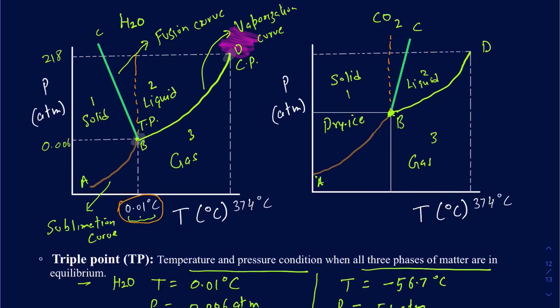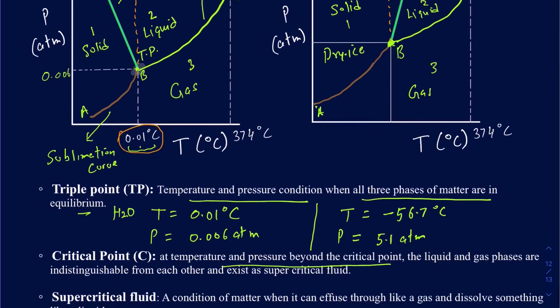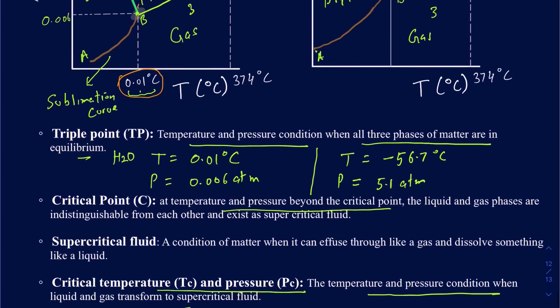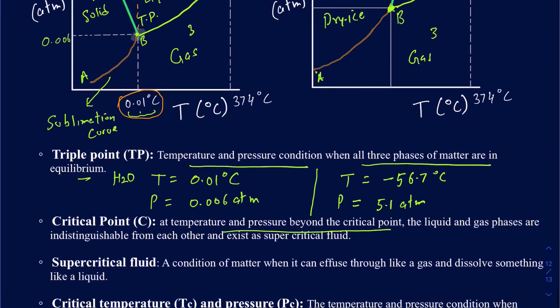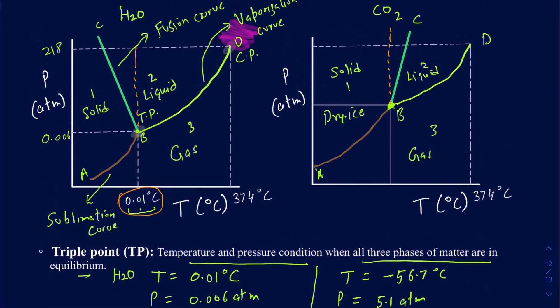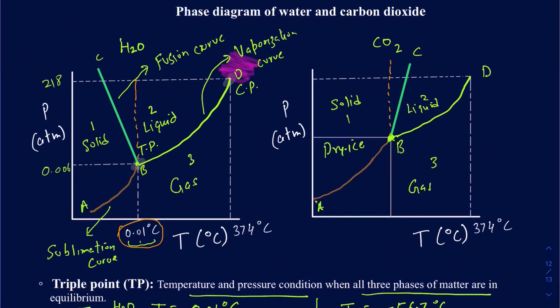That's what you need to know about phase diagrams for water and carbon dioxide. Make sure you know what triple points and critical points are — those are commonly asked questions. You don't necessarily have to memorize the exact conditions, but you should understand what they mean conceptually. If you have any questions, feel free to leave comments below.